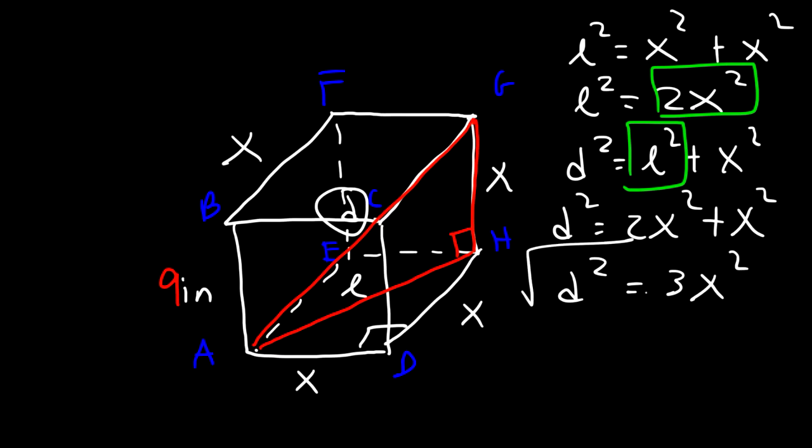So if we take the square root of both sides, the diagonal length for a cube is the square root of 3 times X. And in this example, X is 9. So the answer is going to be 9 square root of 3 inches.